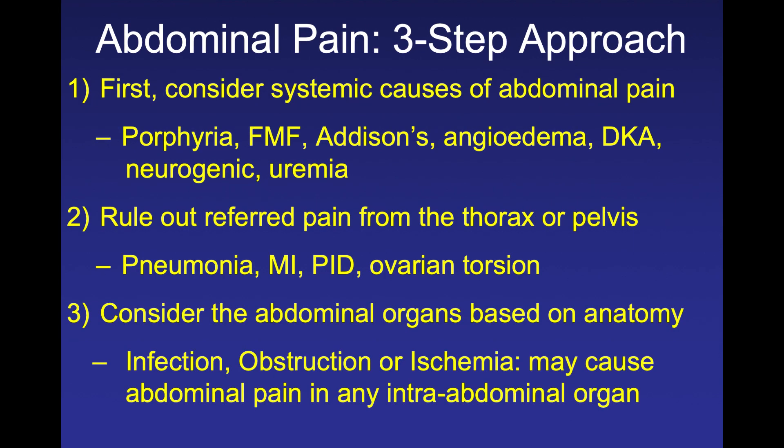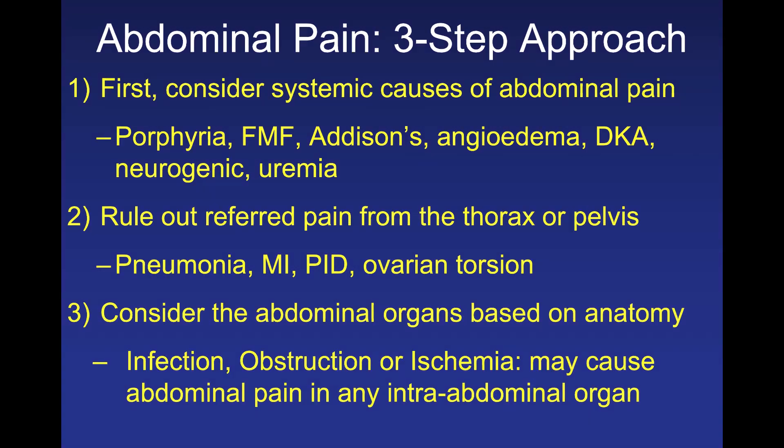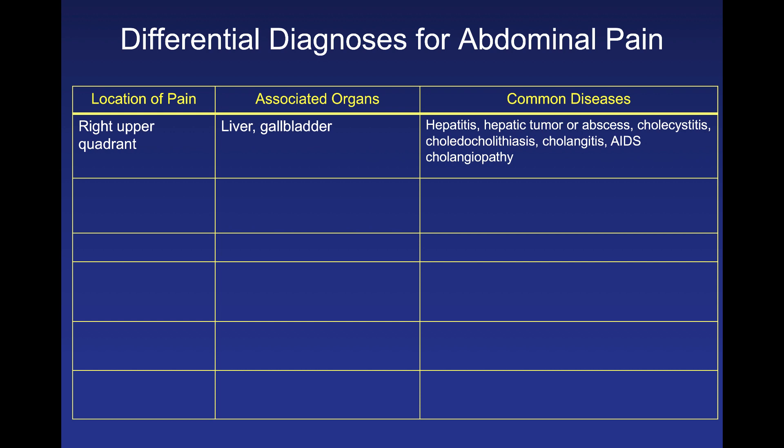The most helpful approach is to consider abdominal organs based on anatomy, always thinking about infection, obstruction, or ischemia. For right upper quadrant pain, think about the liver and gallbladder. Consider hepatitis, hepatic tumor, or abscesses, as well as cholecystitis and choledocholithiasis, which can cause cholangitis. In a patient with HIV, don't forget AIDS cholangiopathy as a cause of right upper quadrant pain.